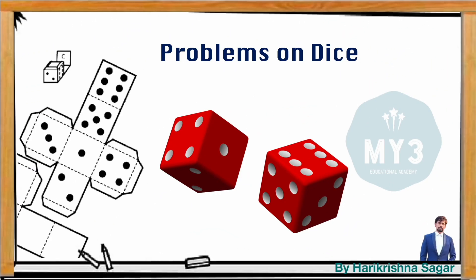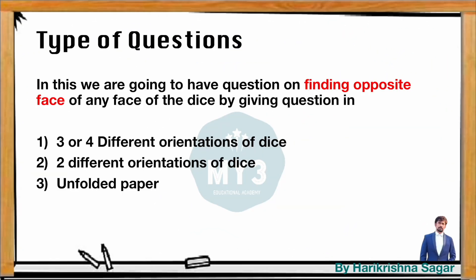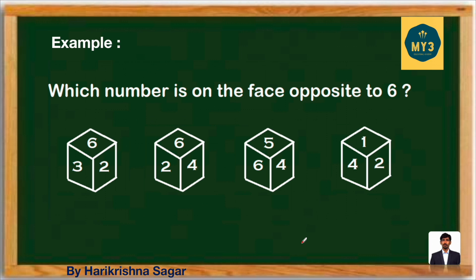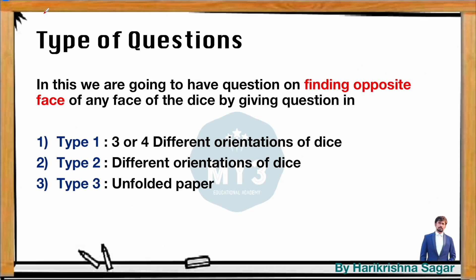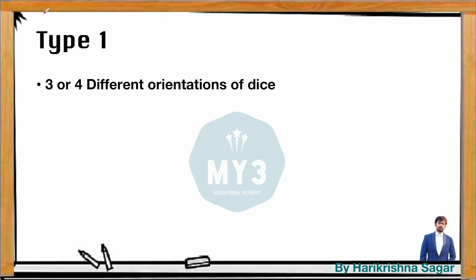Let's look at questions related to dice. Basically, in dice problems you will have questions on finding the opposite face of any particular face — for example, which number is on the face opposite to six? In this chapter, you are going to see three types of questions: Type 1 is three or four different orientations of a die, Type 2 is only two orientations, and Type 3 is an unfolded paper.